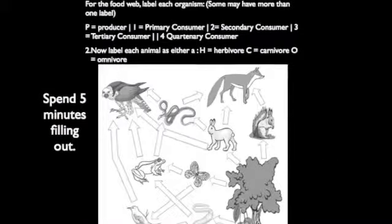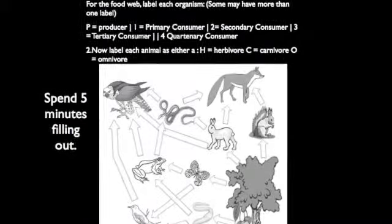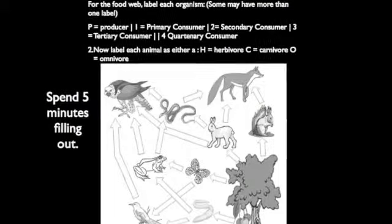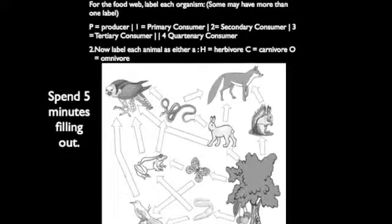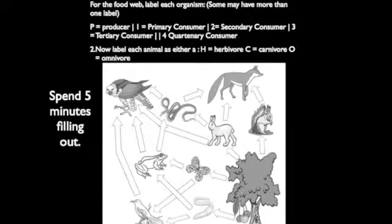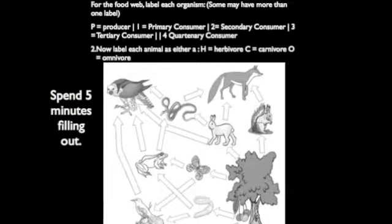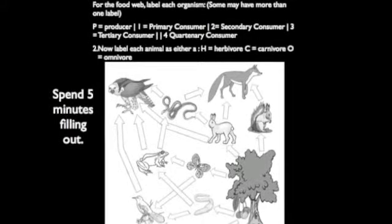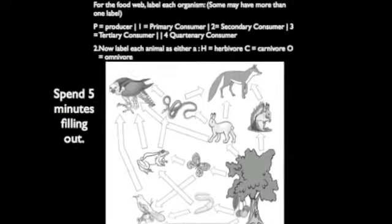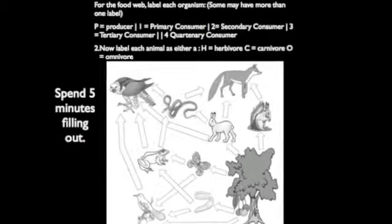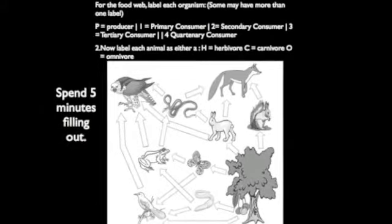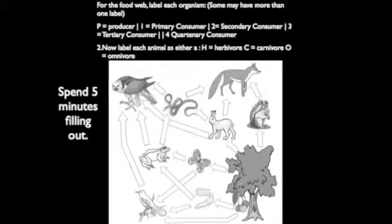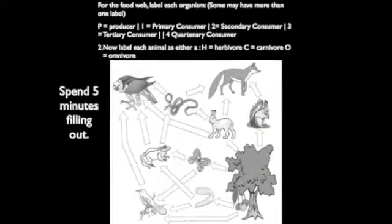Right now would be a good time to pause the video and work on this. For the food web, label each organism — some may have more than one label. Label P for producer, 1 for primary consumer, 2 for secondary consumer, 3 for tertiary consumer, and 4 for quaternary consumer. Then label each animal as either a herbivore, carnivore, or omnivore — H, C, or O. Please pause the video so you can work on this.